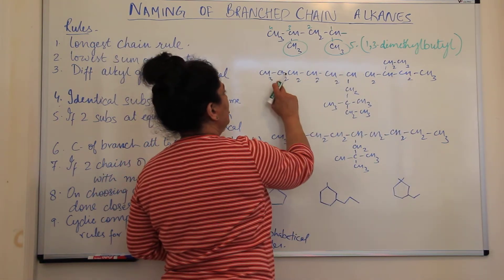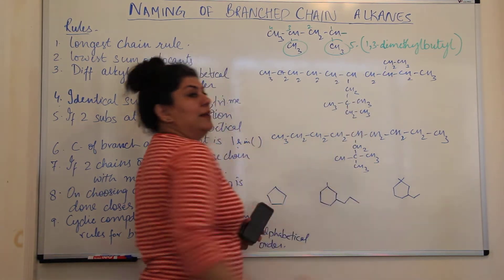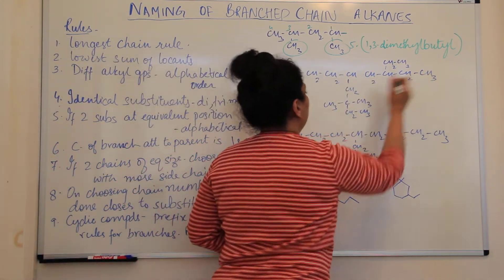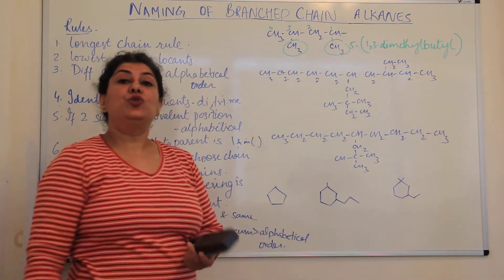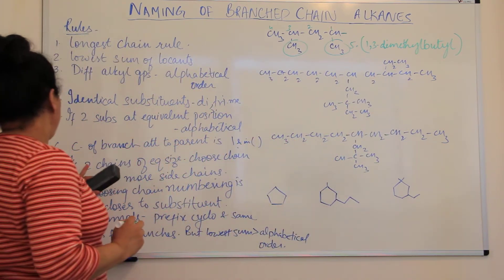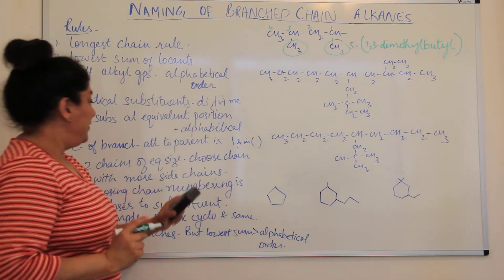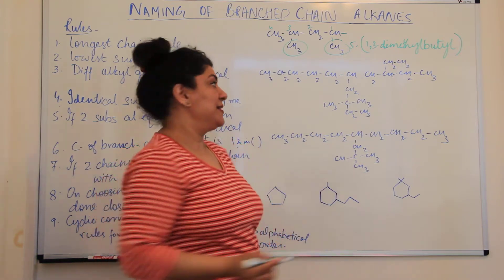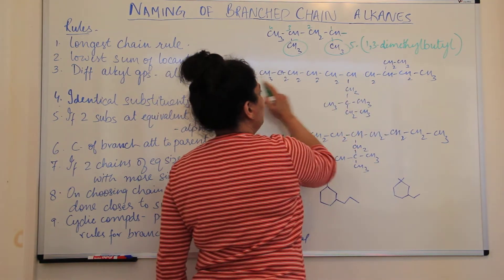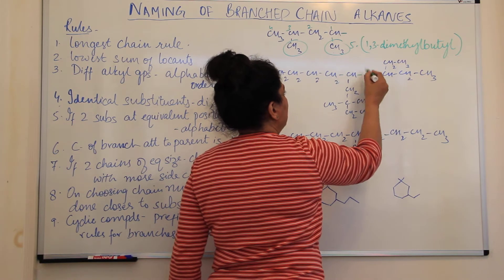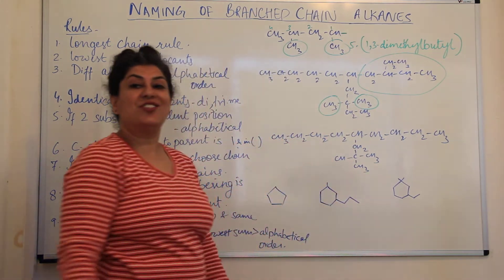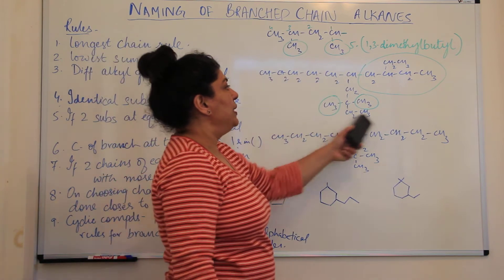If we take the straight chain as the parent chain, it has one side chain and a second side chain — two branches total. But if we choose the zigzag chain as the parent chain, then this whole group becomes one branch, plus two additional branches — giving three branches in total. Since this option has a larger number of branches, this would be our parent chain.